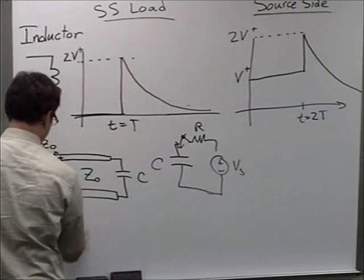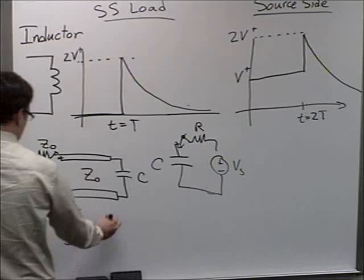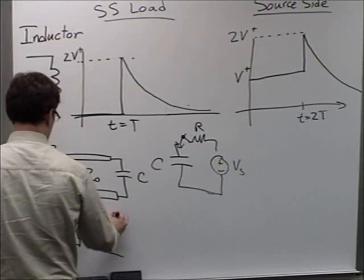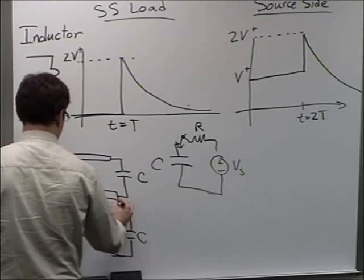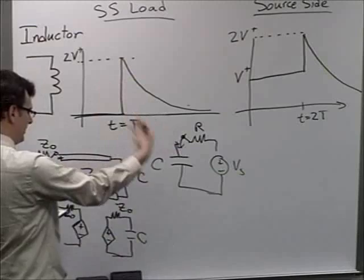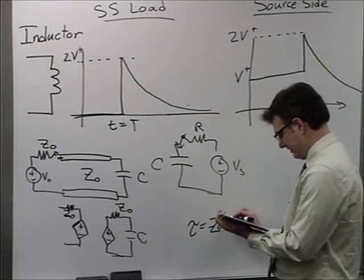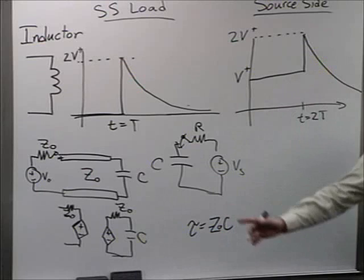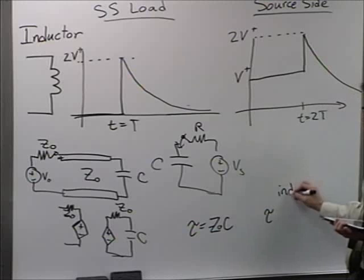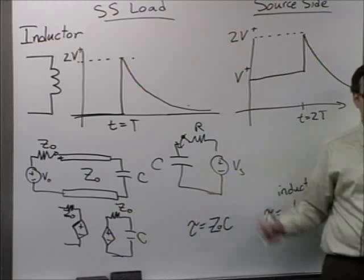We look at the equivalent circuit model. We know that a transmission line always looks like a source in parallel with Z₀ at either terminal. At some point, the voltage switches on — it's like closing a switch with a source, a resistor, and a capacitor in series. So the time constant is Z₀ times C. If there were an inductor at the end of the line, the time constant would be L over Z₀. The resistive value used is the impedance of the transmission line connected to the reactive component.